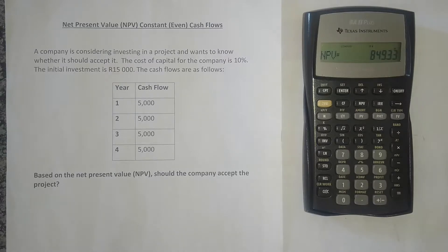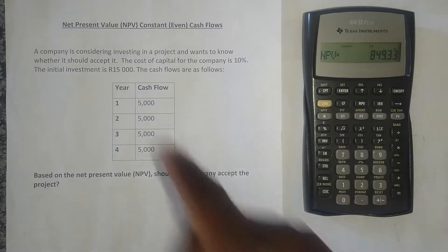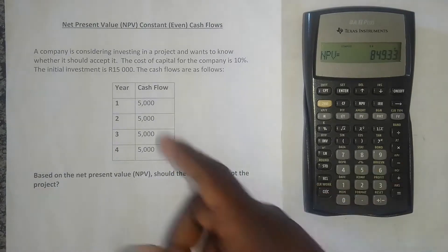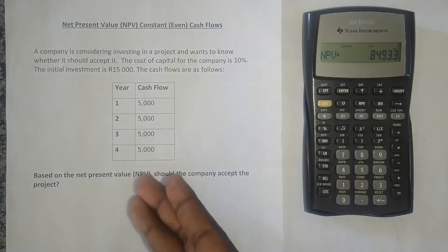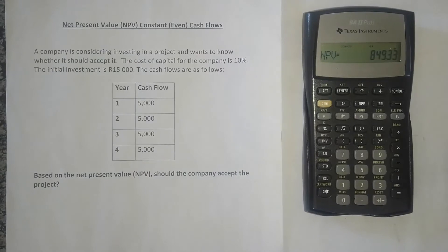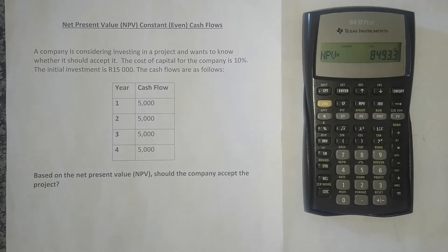Very simple. Start by putting in your cash flows: cash flow at year zero as a negative. Press the downward arrow, put the cash flow at year one, then press the downward arrow again and put how many times that cash flow occurs — that is the number of years, which was four years for us. Then press NPV, put in your interest rate, press the downward arrow, and compute your net present value. You are now able to calculate the net present value when you have constant cash flows using this financial calculator.